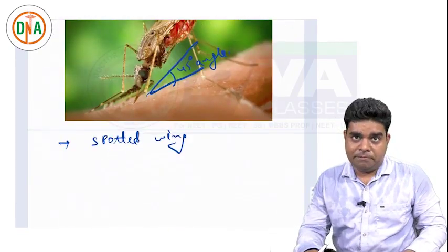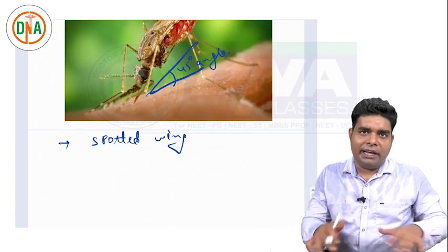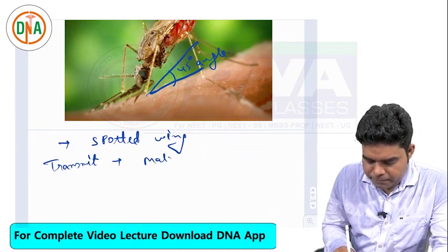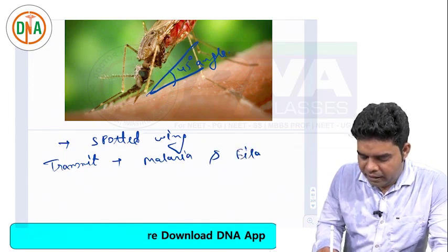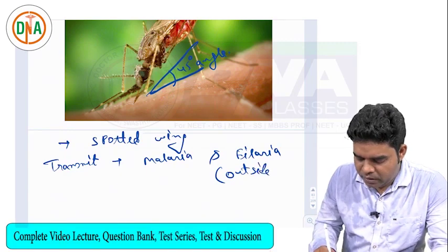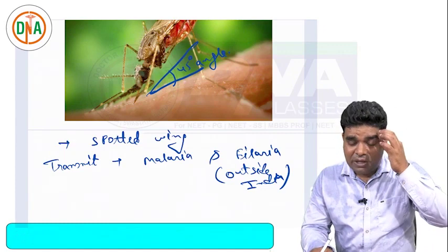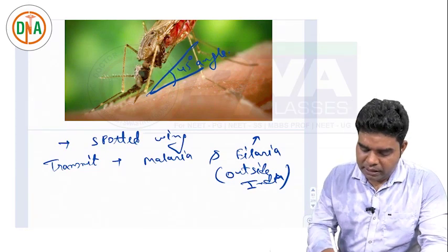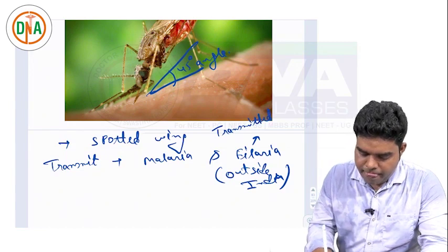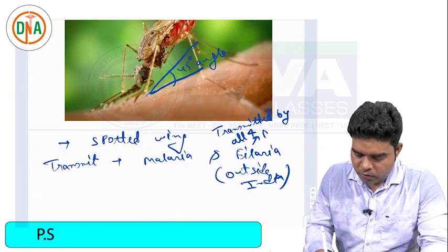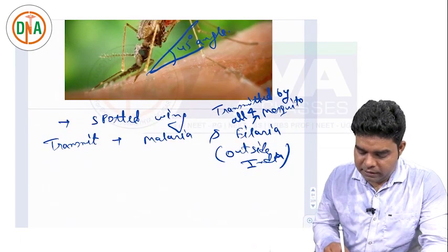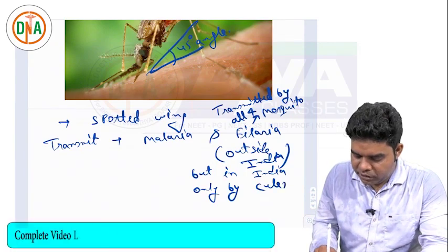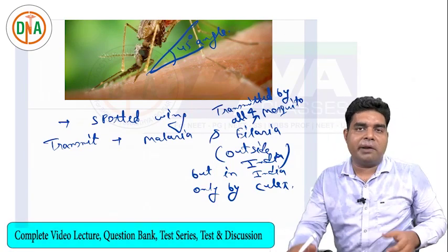We all know that Anopheles transmits malaria. It can also transmit filariasis, but not in India — only outside India. Filariasis is one disease that is transmitted by all four types of mosquitoes, but in India it is only transmitted by Culex. So if someone asks which disease is transmitted by all four types of mosquitoes, the answer is filariasis.